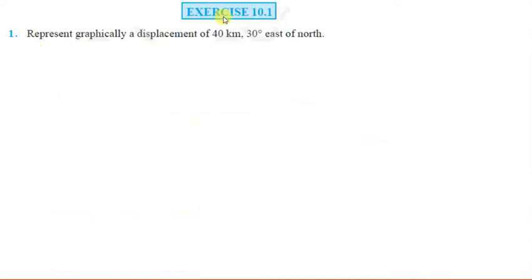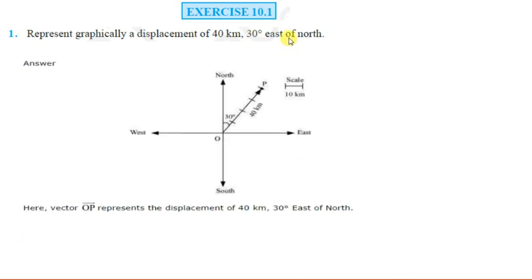Now we start the exercise. The first question is: represent graphically a displacement of 40 km, 30 degrees east of north. We show the four directions — north, east, south, west. The displacement is 30 degrees from north towards east. Using a scale of 1 cm = 10 km, we mark 4 cm, so the distance OP will represent 40 km in the direction 30 degrees east of north.